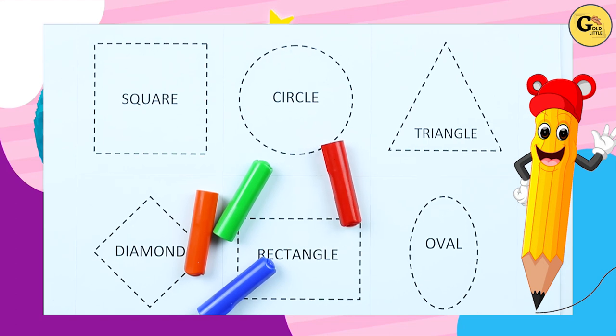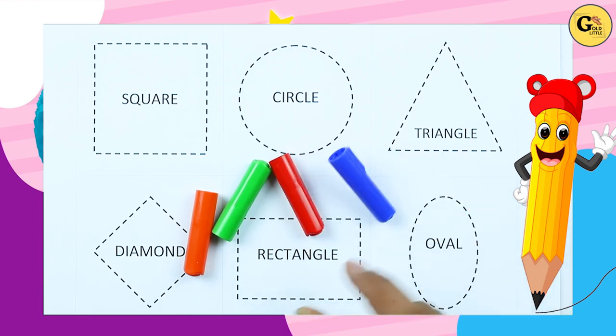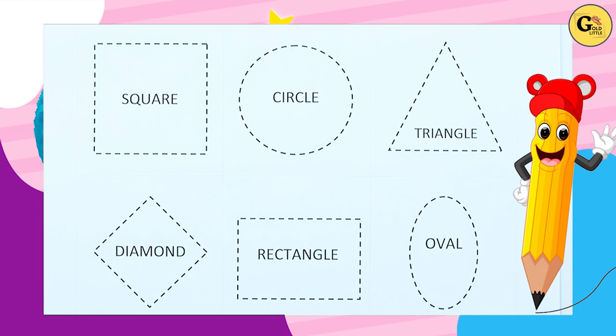Hello friends, today we learn shapes: square, circle, triangle, diamond, rectangle, oval with colors: red color, blue color, orange color, green color. Let's start.